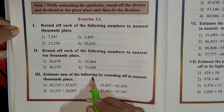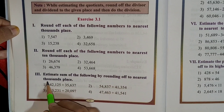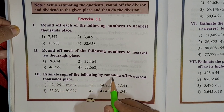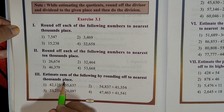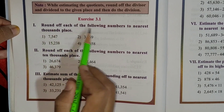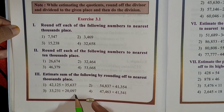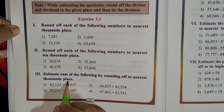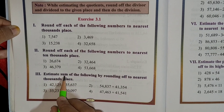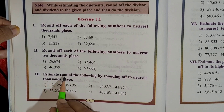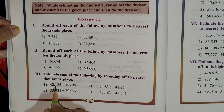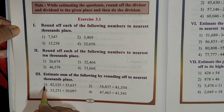Estimate the sum of the following by rounding off to the nearest thousands place. We already know how to round off to the nearest thousands place — we have done that in the first main. The same thing we have to do here. There is one more new word: estimate sum. So what is this estimate sum? We will understand by taking the first example.